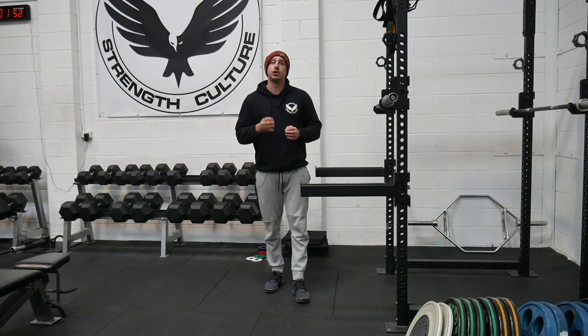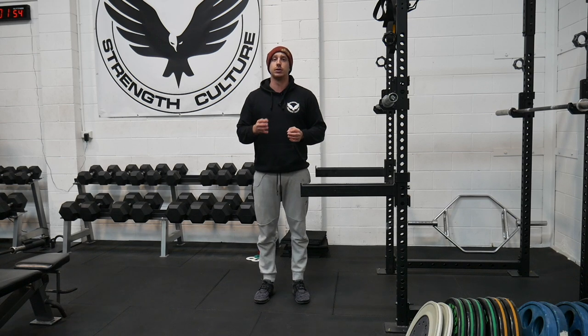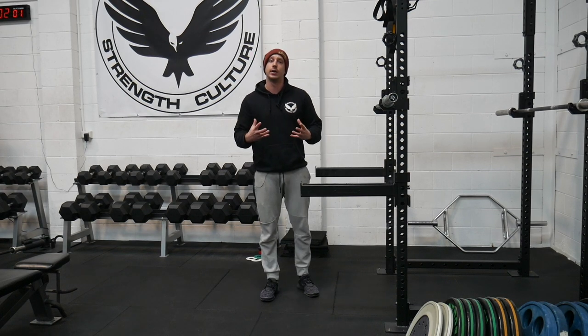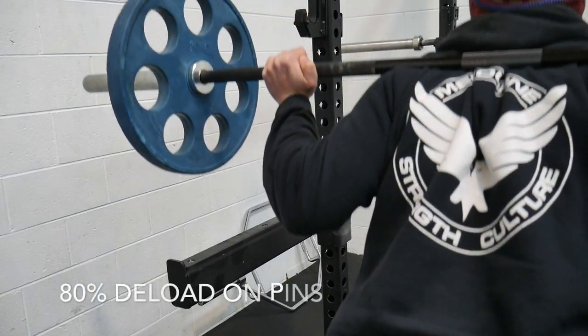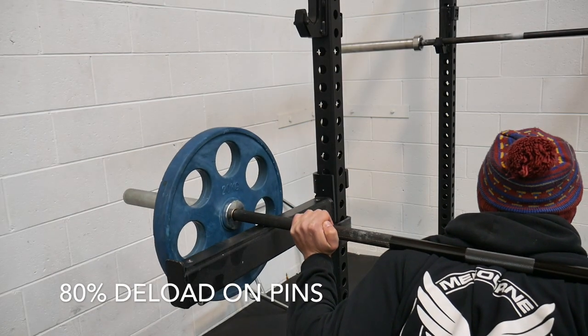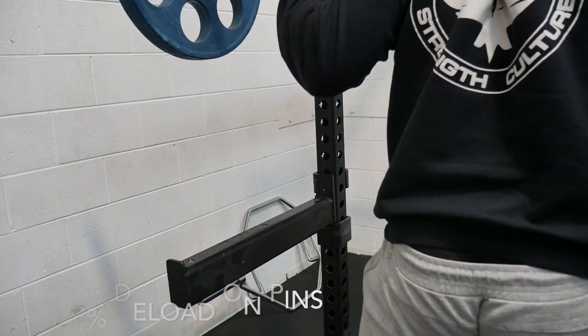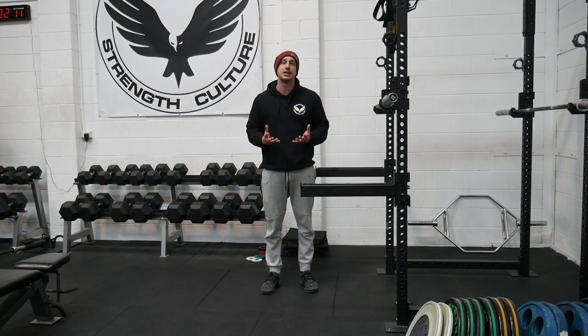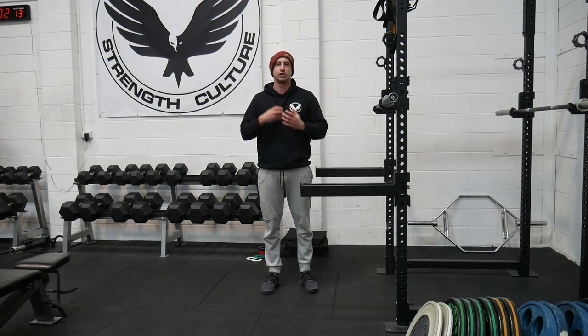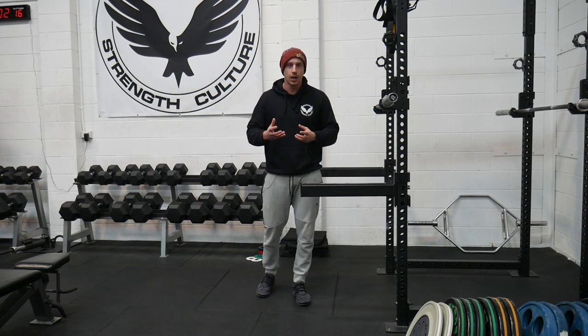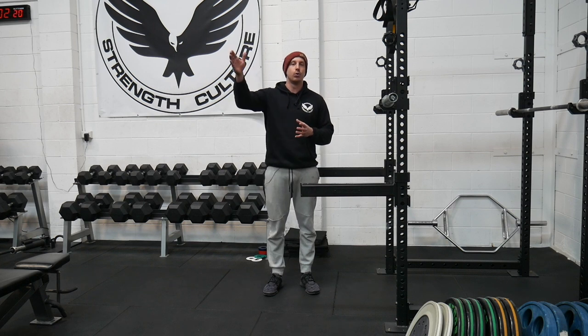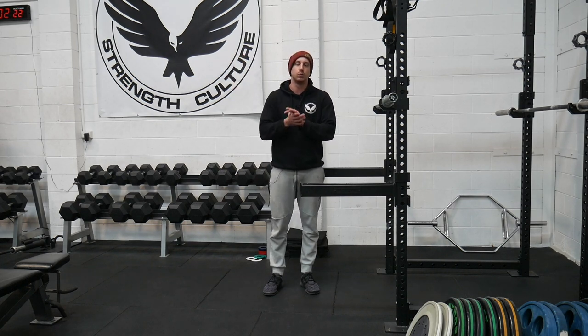For the actual execution of the pin squat, what we're actually looking for is about an 80% deload of the weight onto the pins. So we're not looking to remove all tension throughout the body. We're just looking to deload about 80% of the bar's weight onto the pins. This should help you maintain the muscular contraction to hold your positions and allow you to generate the force needed to then break inertia and actually start the bar moving again. The most important thing with the pin squat, if you're trying to iron out a good morning squat, like we explained on the whiteboard, is that you're not letting your hips raise before your knees.